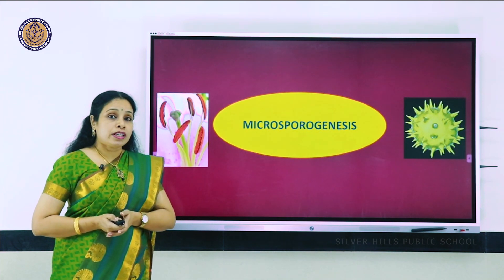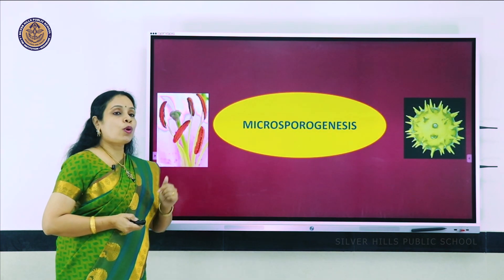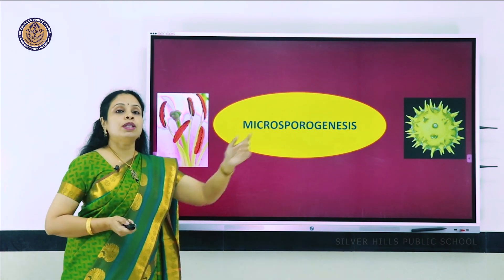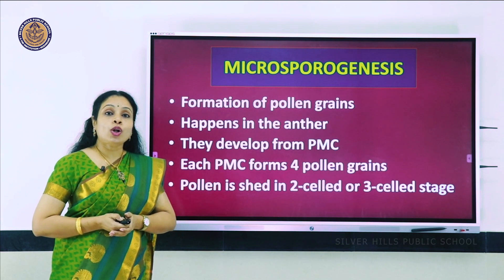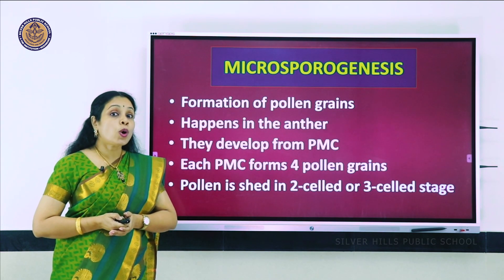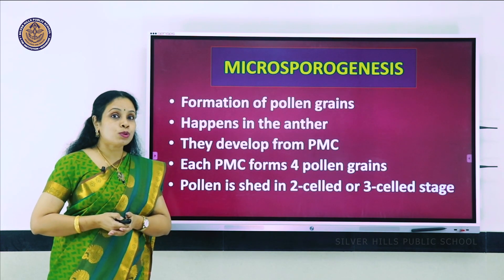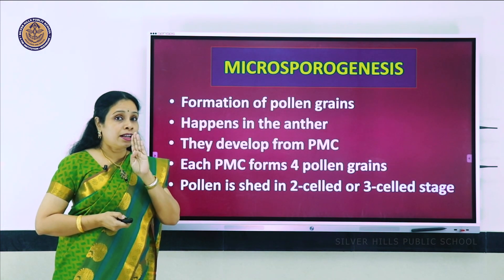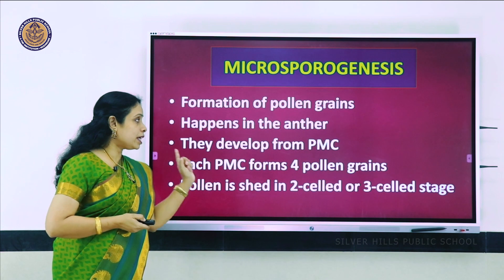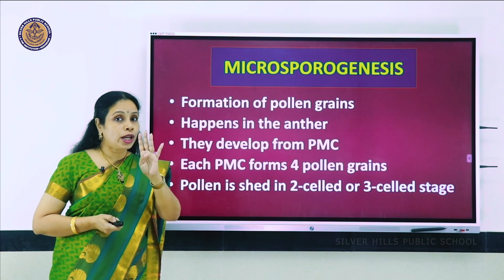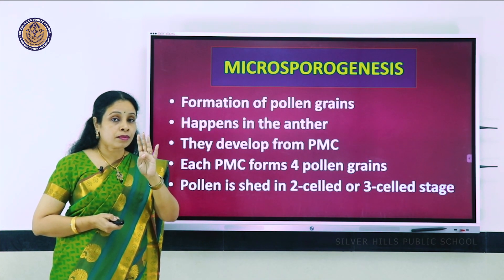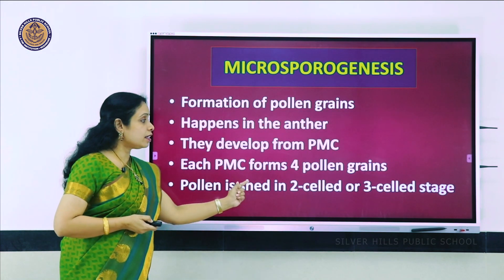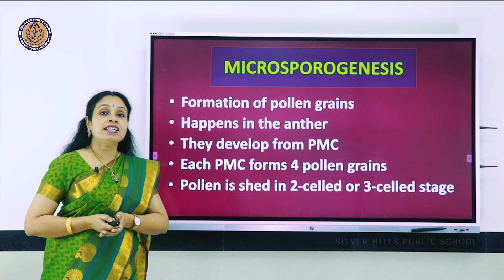In gametogenesis there is microsporogenesis, where the anthers form the pollen grains. The mother cells are called PMC - pollen mother cells or microspore mother cells. Each pollen mother cell is capable of forming four pollen grains. When mature, the pollen grains can be shed either in the two-celled or three-celled stage.